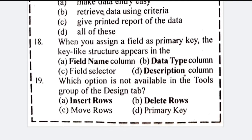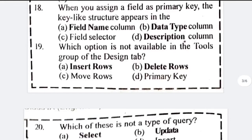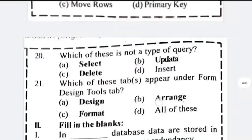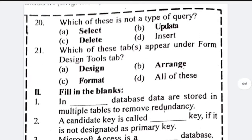The key icon appears in the field selector column. Number 19: which option is not available in the tool group of the Design tab — insert row, delete row, move rows, primary key — answer will be primary key. Number 20: which of the following is not a query — select, update, delete, insert.